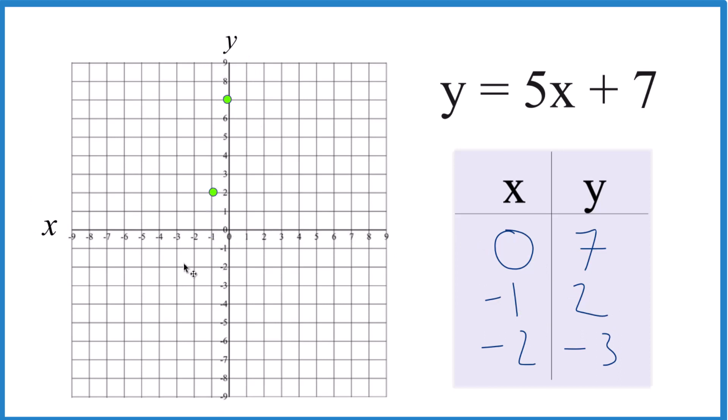You could draw the line with just two points. I'd like to have 3 though, make sure I'm right. x is negative 2, y is negative 3, and you can see the line there. Let's put a line through that.